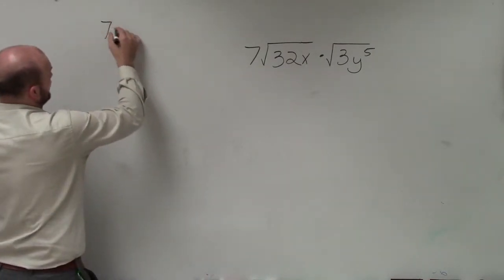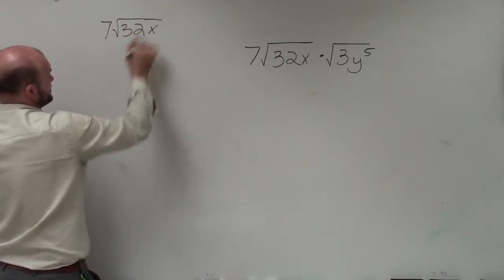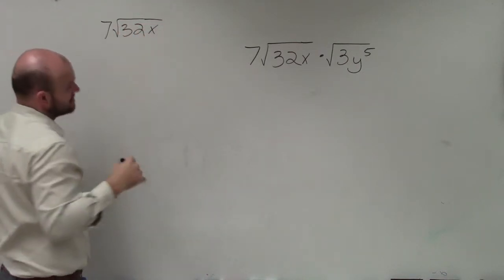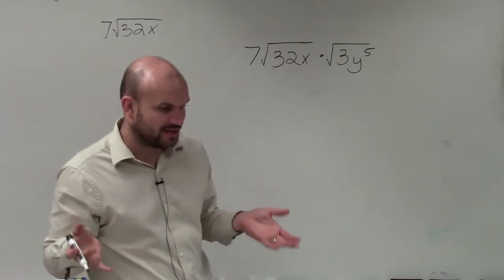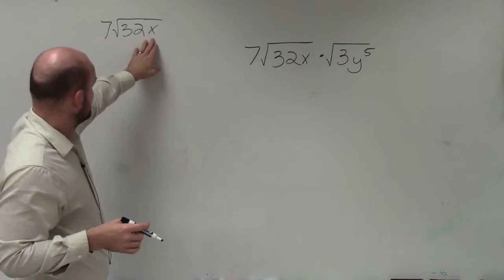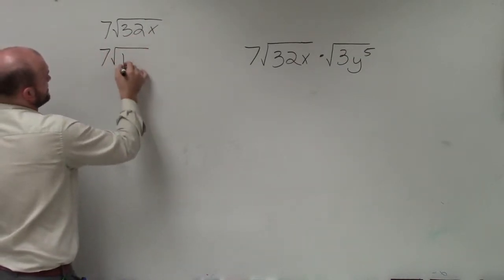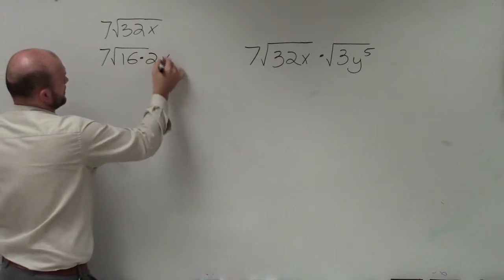So if I was going to simplify this, I would say, well, what is the largest square number that divides into 32? Because x is going to be simplified. I can't break down x into any pairs of numbers, but 32, I can rewrite that as 7 times 16 times 2 times x.